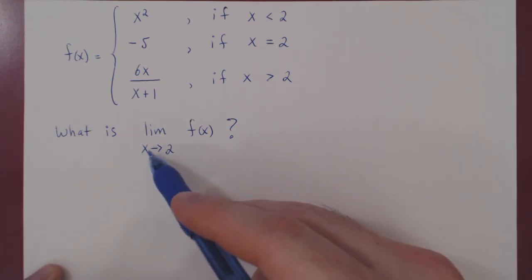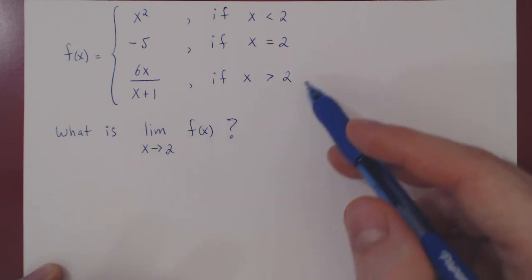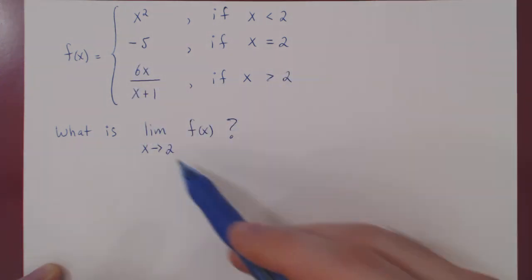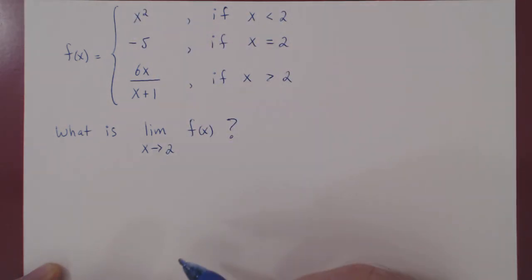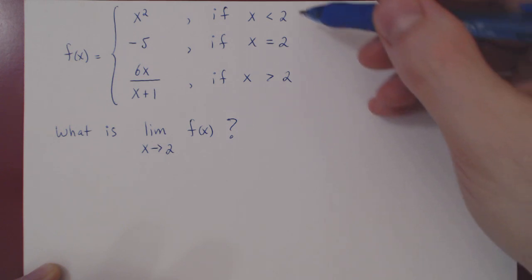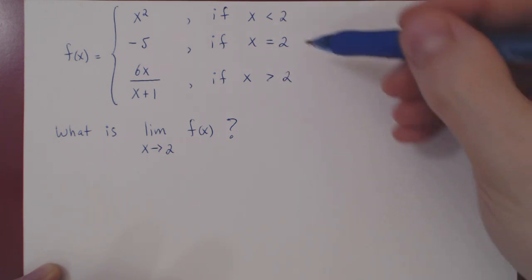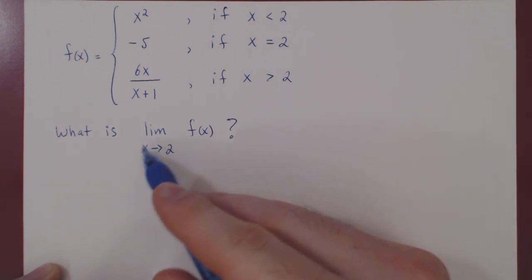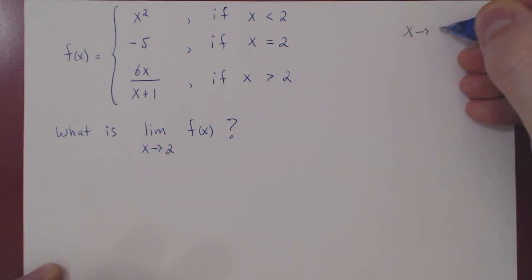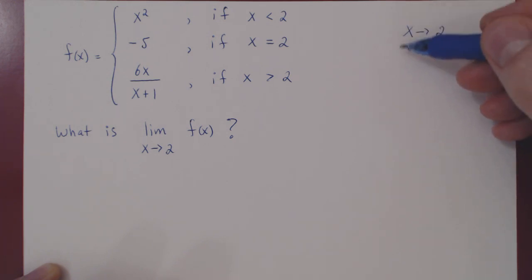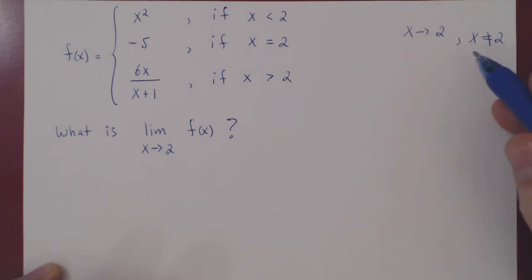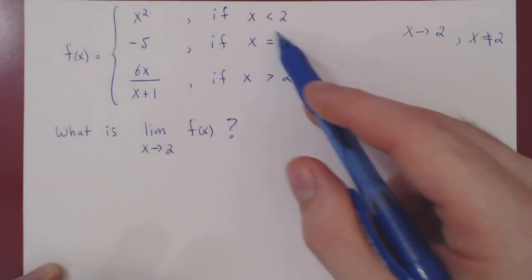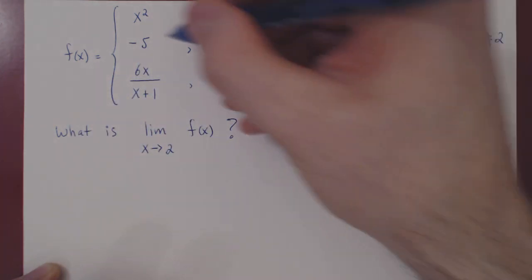Once again there is ambiguity. As x approaches 2, x could be larger than 2, in which case f of x is 6x over x plus 1, or x could be smaller than 2, in which case f of x is x squared. We must look at the limit from the left and the limit from the right. One thing we can eliminate is the second case — f of x equals negative 5 at exactly 2 — because as x approaches 2, x is never exactly equal to 2, so the value of the function at 2 is completely irrelevant and we can ignore it.